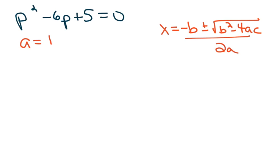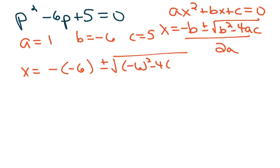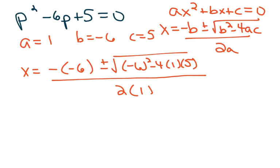So a is 1, because a is always the coefficient in front of the square term when the equation is in ax squared plus bx plus c form. So b is negative 6 and c is 5. I always teach students to evaluate what's under the square root sign first — the b squared minus 4ac part. Negative 6 squared is 36, minus 4 times 1 times 5 is 20, and 36 minus 20 is 16.